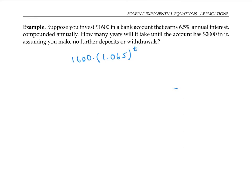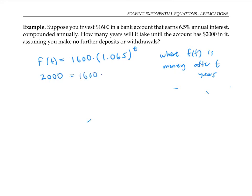I'll write this in function notation as f(t) = 1,600 times 1.065 to the t, where f(t) is the amount of money after t years. Now we're trying to figure out how long it will take to get $2,000. $2,000 is an amount of money, so that's a value for f(t), and we're trying to solve for t, the amount of time.